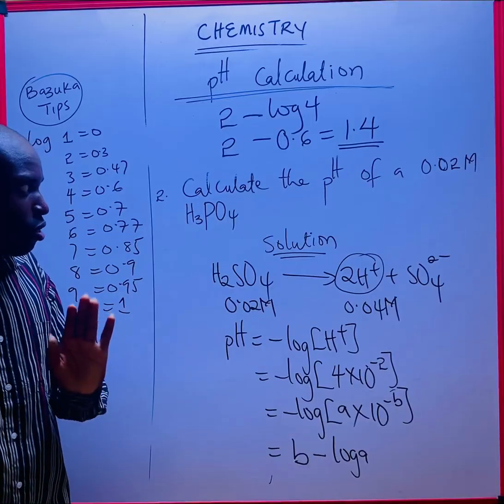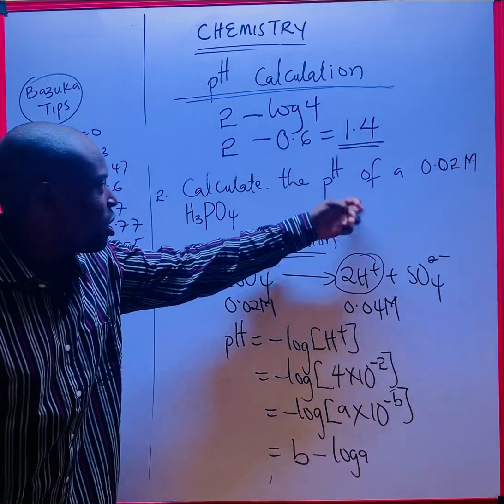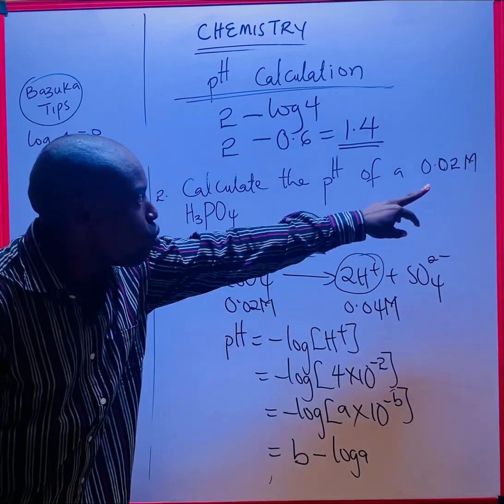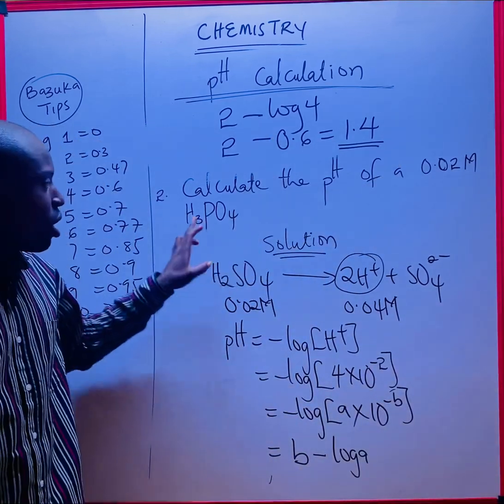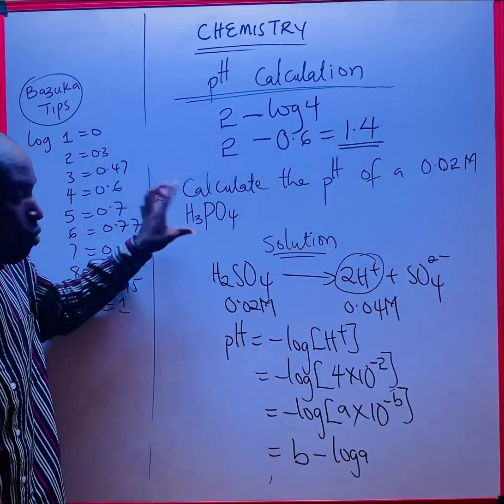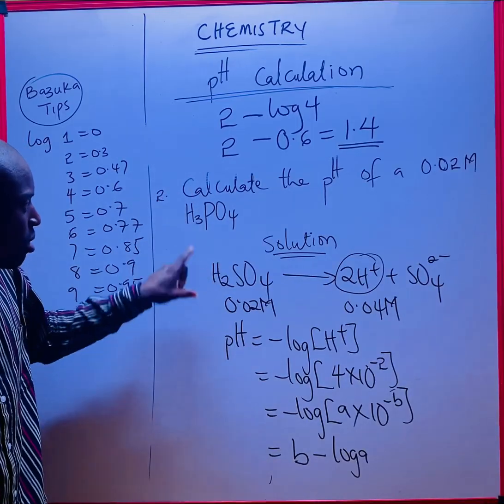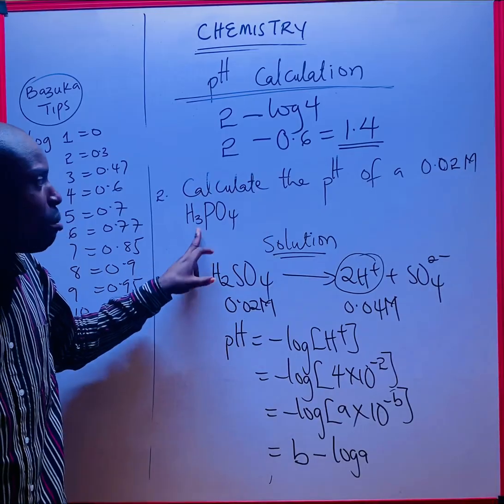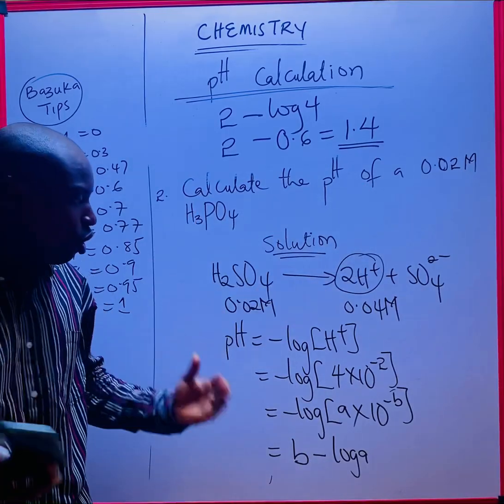Easy, right? So also try the second one: calculate the pH of a 0.02 molar concentration of H3PO4. Since you have three hydrogen, it will be three multiplied by this, then use the shortcut I gave you and you will get your answer.